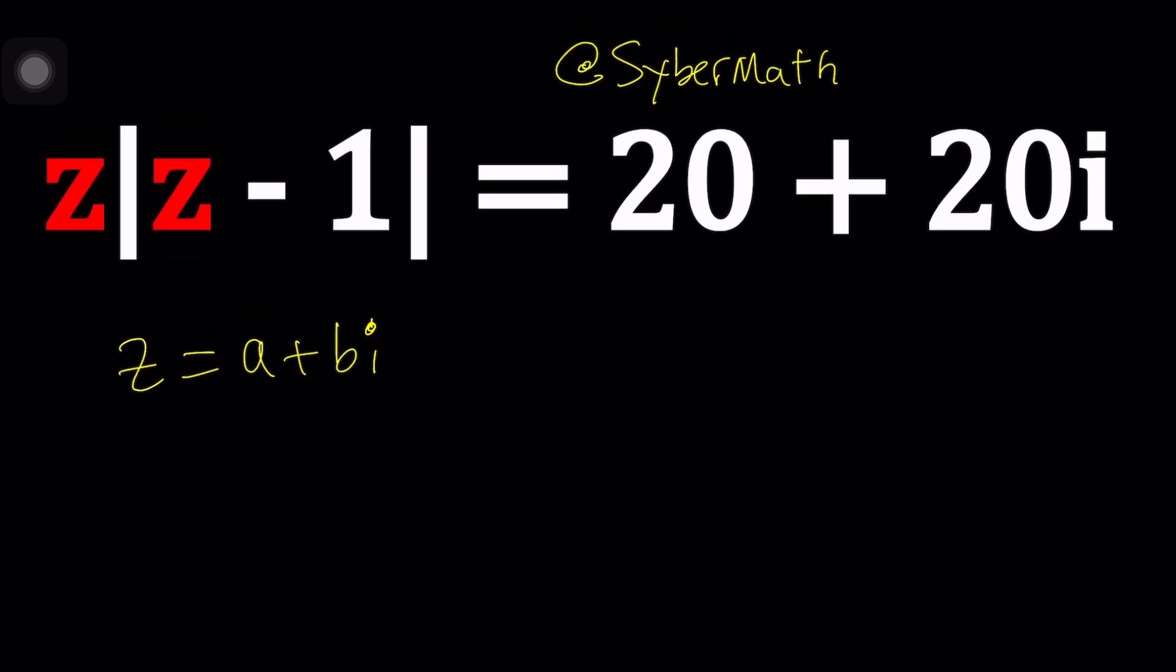So what is z minus one? We subtract one from this and then take the absolute value which is |a-1+bi|. We can treat this as our real part and this as our imaginary part. How do you find the absolute value of a complex number?